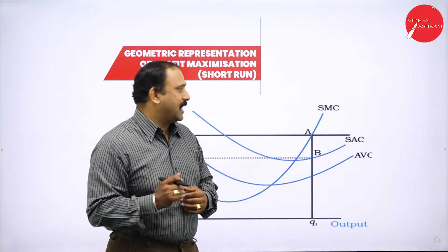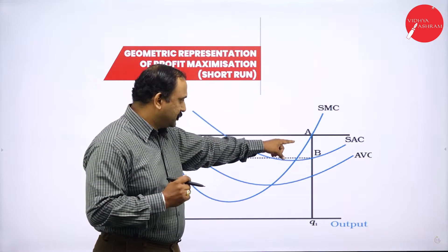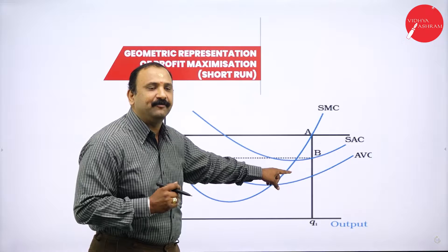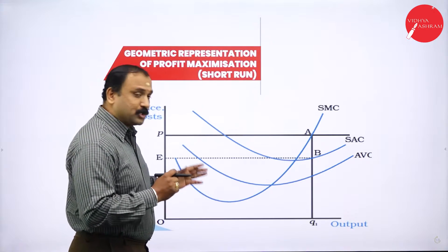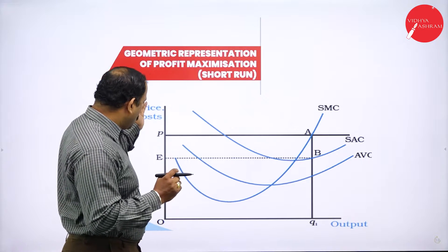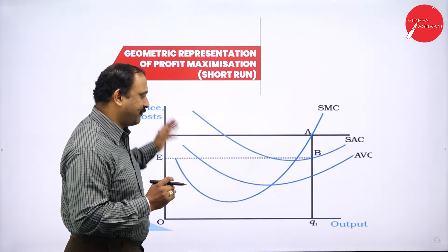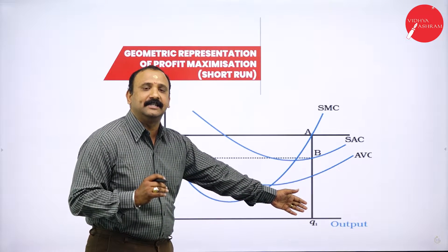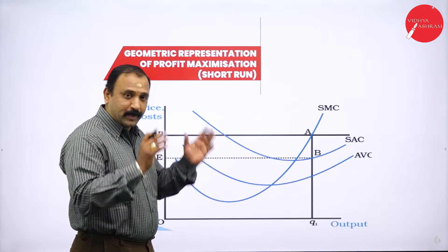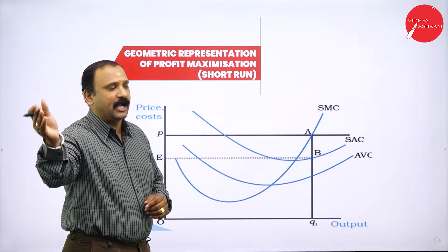Looking into the graph, you will be able to see the short run marginal cost, the short run average cost, and the average variable cost. On the y-axis, you have the price or cost factor. On the x-axis, you have the output factor. So we are going to take two things: one is the price, and the other one is the output.